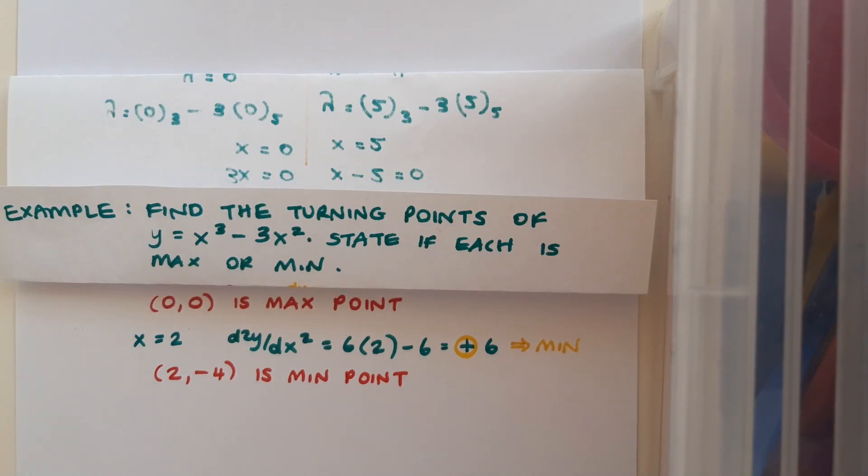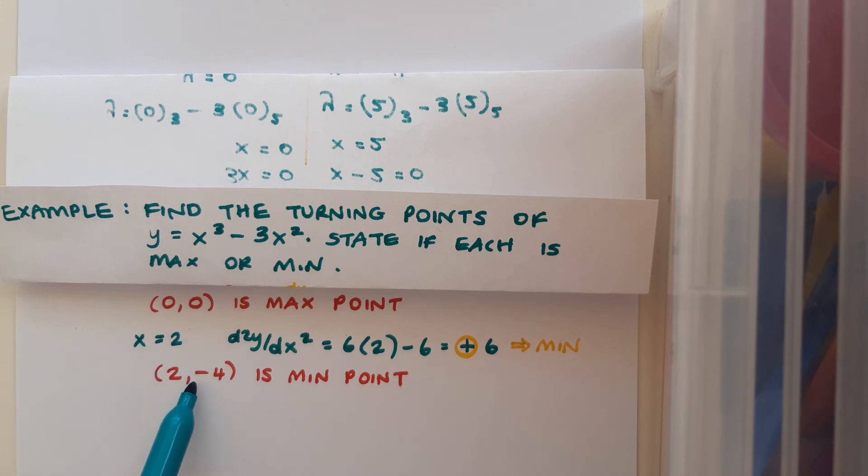At this stage, it's no harm to go back and reference the original question. It said find the turning points and state if each is max or min. So we've done that. We've found both turning points, and we've stated what type of turning point they are.